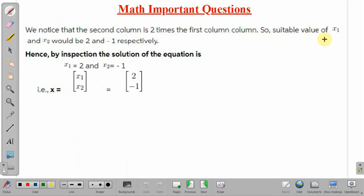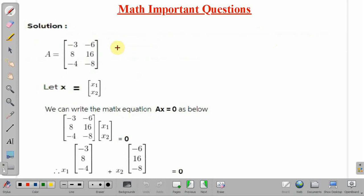So the suitable value of x1 and x2 would be 2 and minus 1. Simply by inspection, we can say that it would be 2 and minus 1. Then only it will be 0.